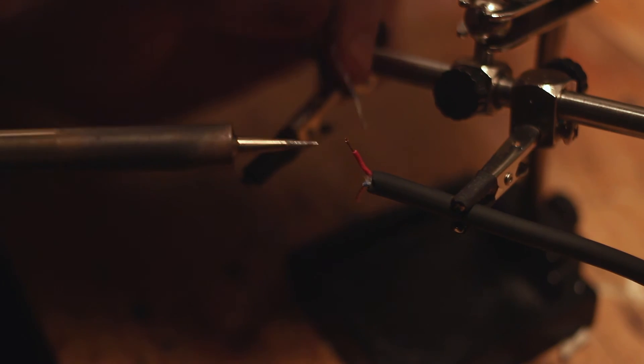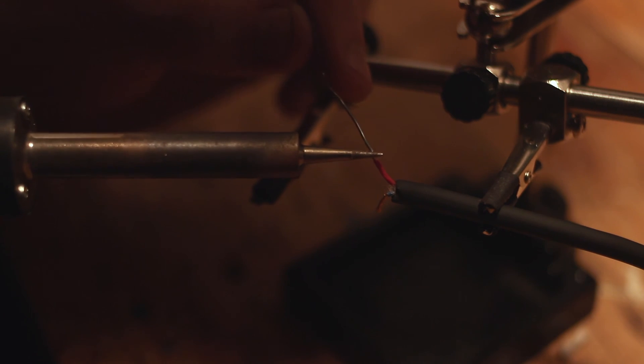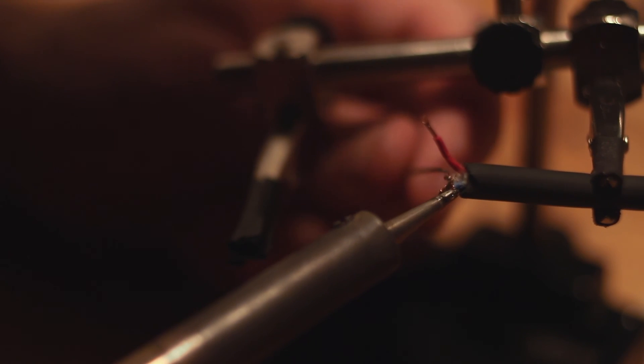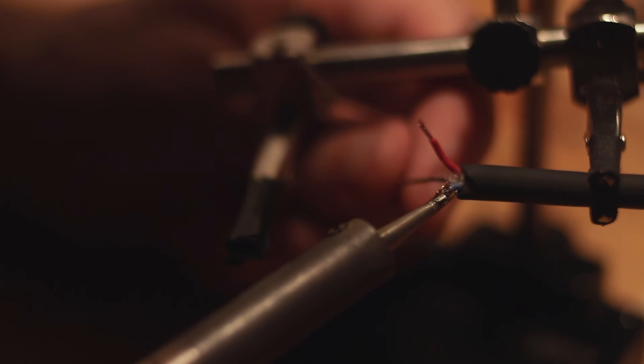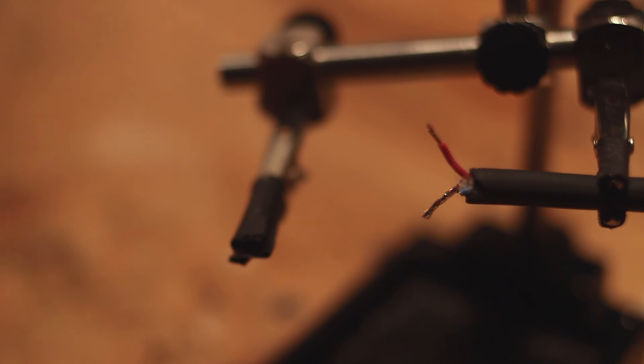Okay, next you want to tin the ground and conductor wire. Now what this means is you're going to want to heat up the wire enough so that you can melt solder onto it and it will basically make it look like it's tin. This will help it make a solid connection to the plugs that you're going to solder it to.